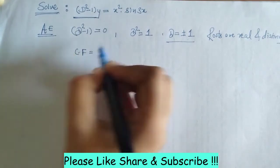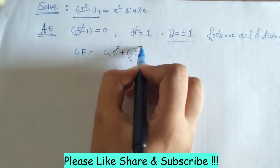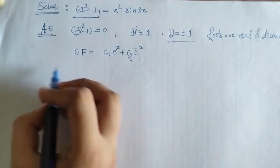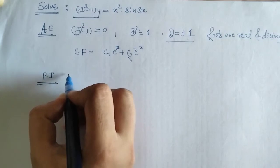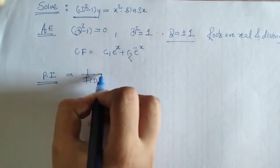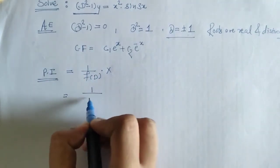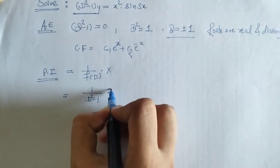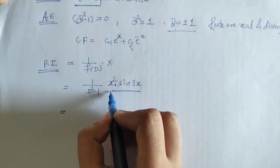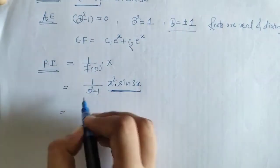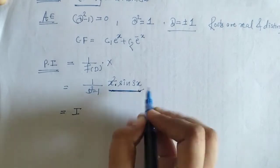So CF is given by c₁e^x + c₂e^(−x). Now we have to find PI. For PI we have the formula: 1 upon f(d) into x, where x here is x² · sin(3x). Since we have sin(3x), we have to find the imaginary part of the corresponding operation — that is the required PI.